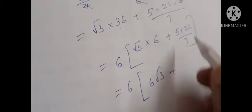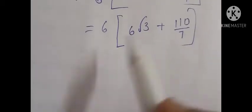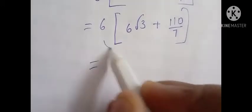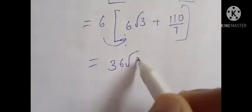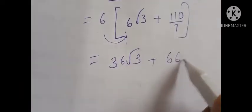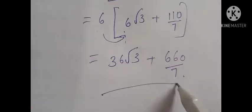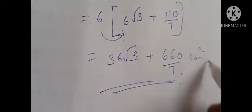So we get 6(6√3 + 110/7). This can also be written as 36√3 + 660/7. So this is the area of the shaded portion.